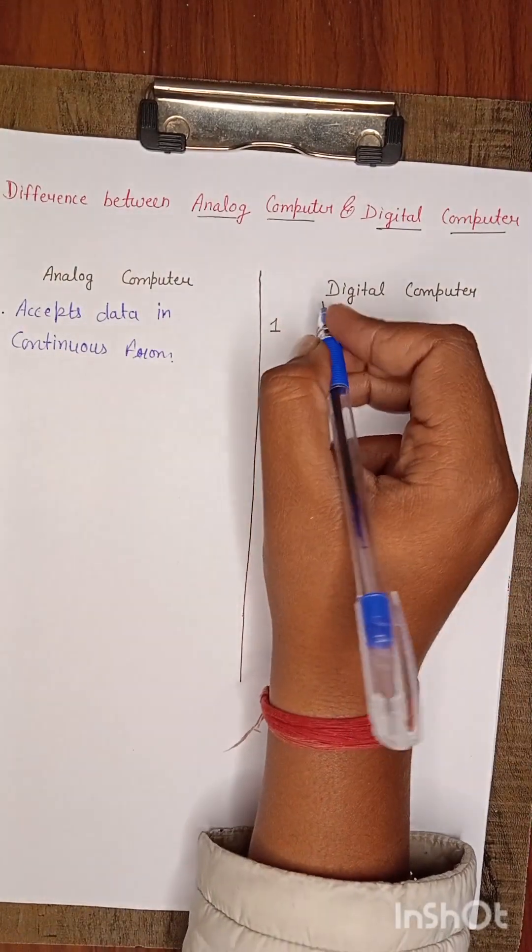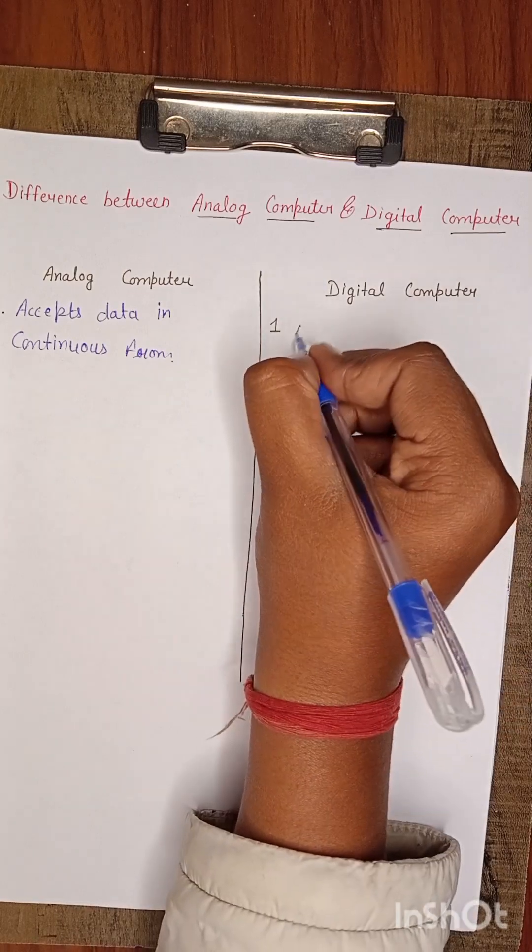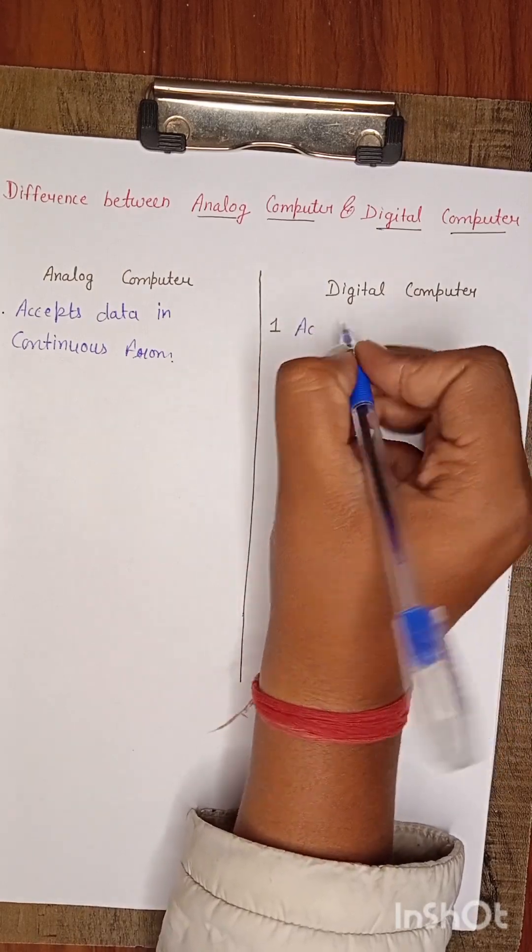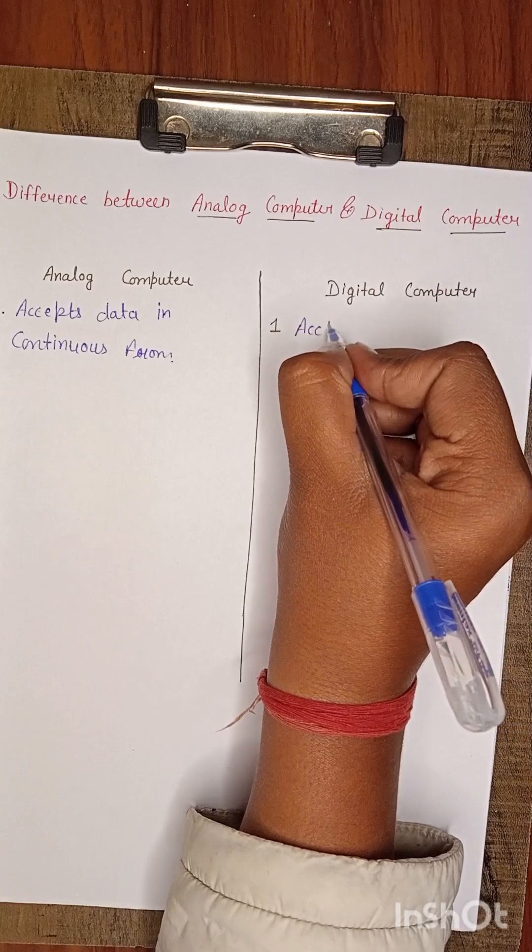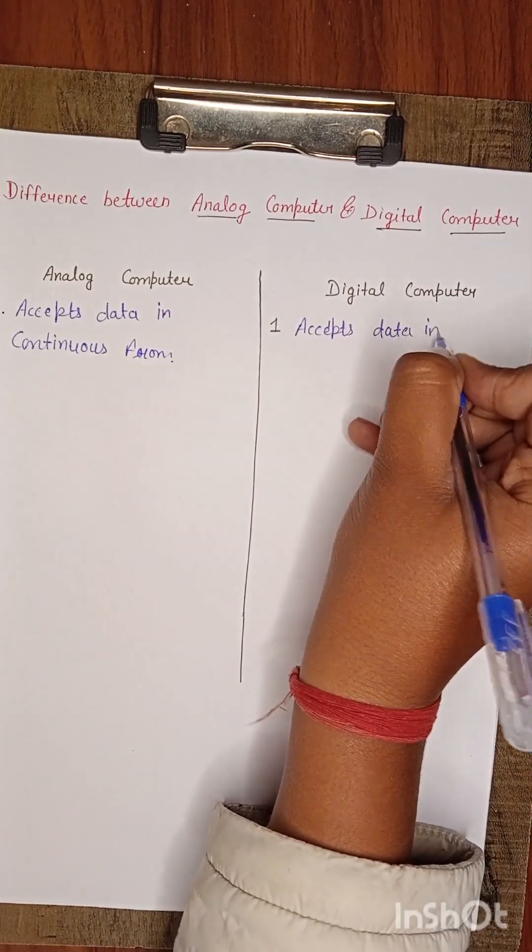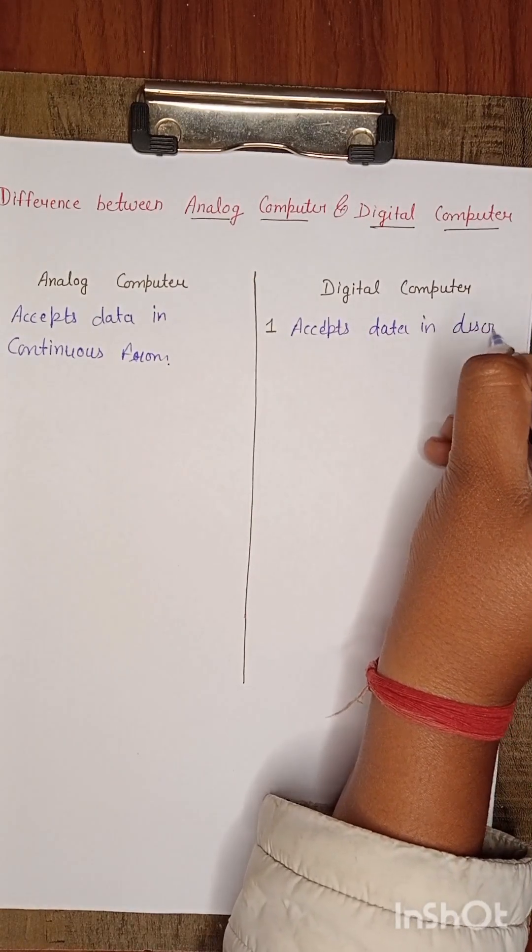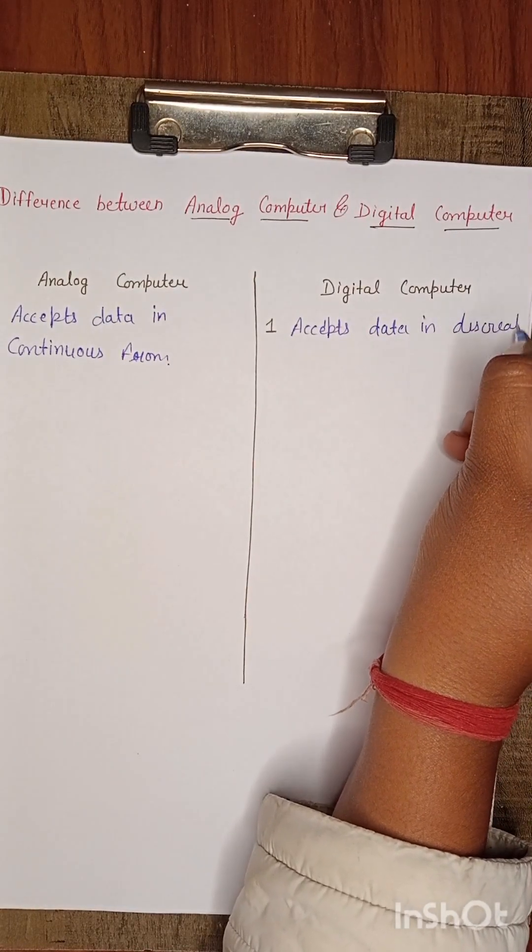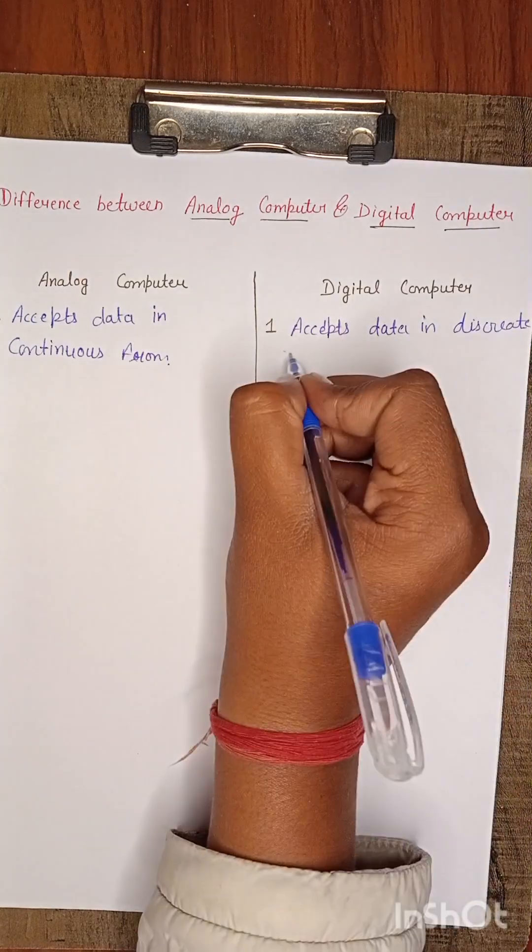This data is accepted in continuous form. Digital computer accepts data in discrete form.